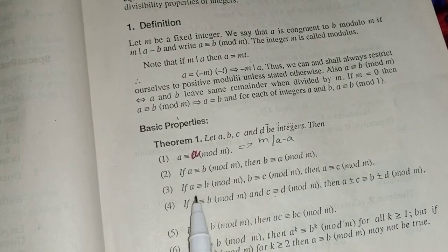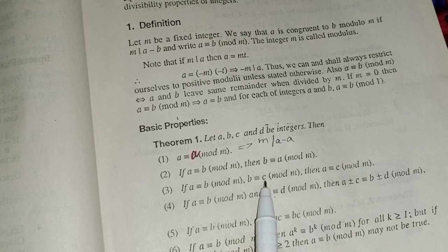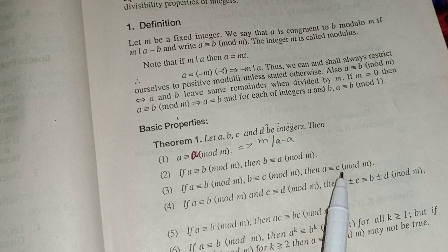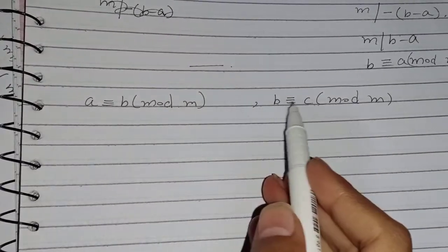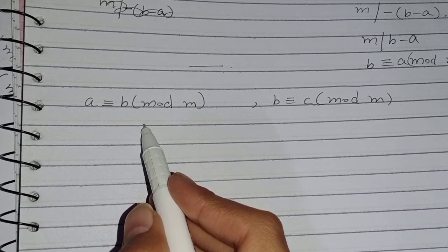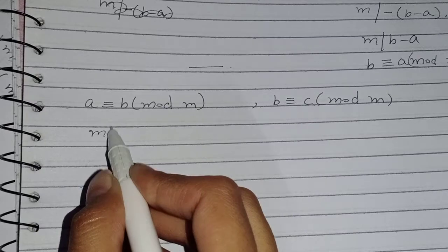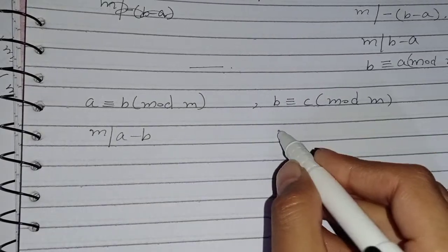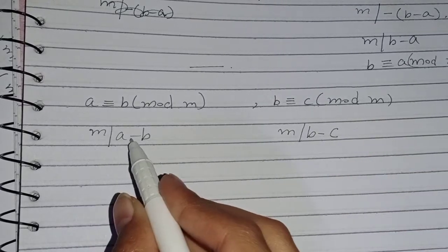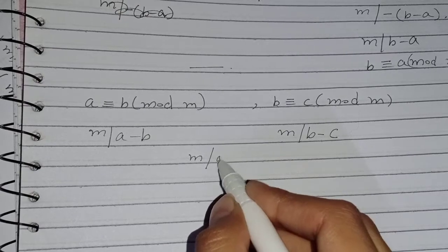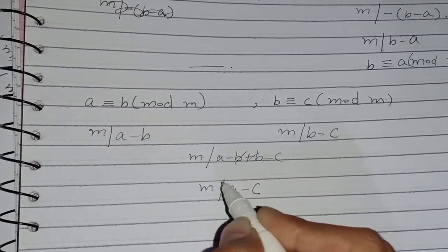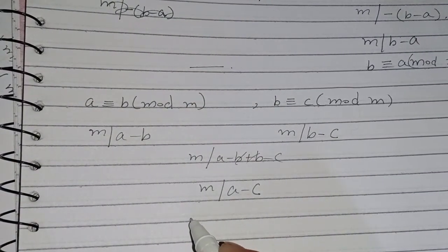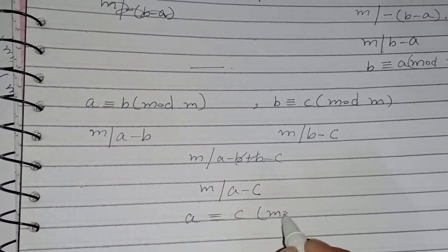Property 3 (Transitive): If a ≡ b (mod m) and b ≡ c (mod m), then a ≡ c (mod m). Proof: m divides a minus b and m divides b minus c. So m divides (a minus b) plus (b minus c). Since the b terms cancel, m divides a minus c, and therefore a ≡ c (mod m).